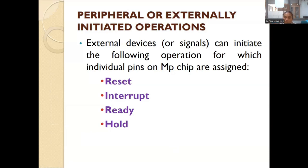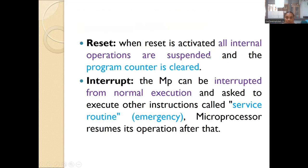The next topic is peripheral or externally initiated operations. An external device can initiate operations to the microprocessor using four signals: reset, interrupt, ready, and hold. Reset: when reset is activated, all internal operations are suspended and the program counter is cleared — it is used to stop the process the microprocessor is currently executing. Interrupt: the microprocessor can be interrupted from its normal execution and asked to execute other instructions for a service routine, then resumes its original operation afterward. This is used to temporarily pause execution, perform another process, and then continue the previous one.